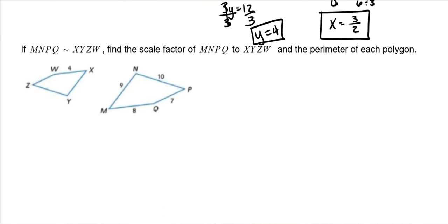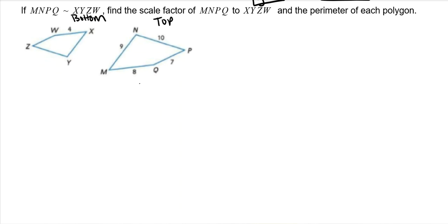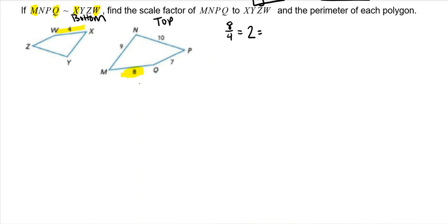In our last example, if these two polygons are similar, find the scale factor from polygon MNPQ to polygon XYZW. MNPQ has to be on top and XYZW on the bottom, because it says specifically from MNPQ to XYZW. The side WX corresponds to MQ — the first and last letters of each polygon's name — and MQ is 8 while WX is 4. So the scale factor is 8 over 4, which equals 2.